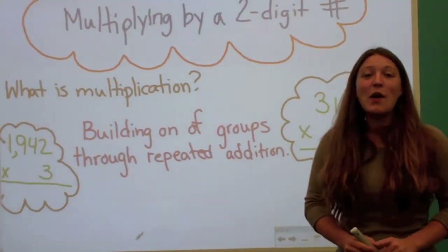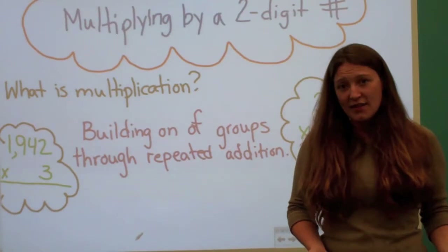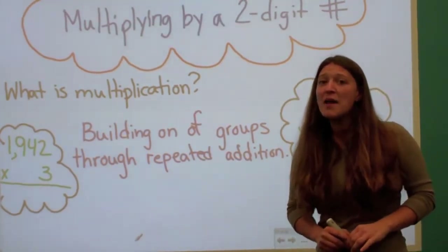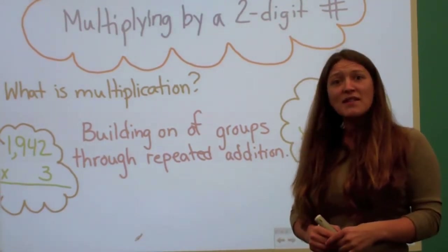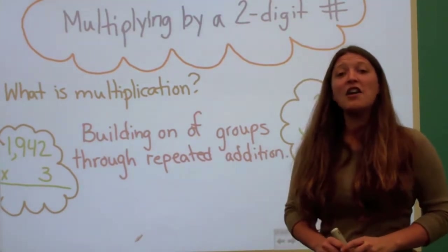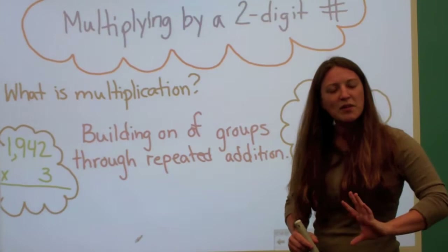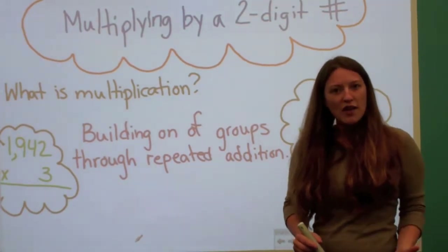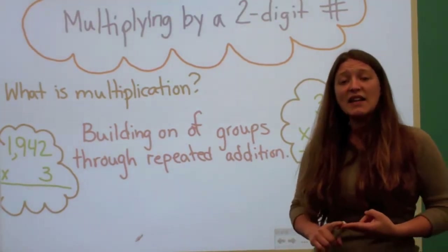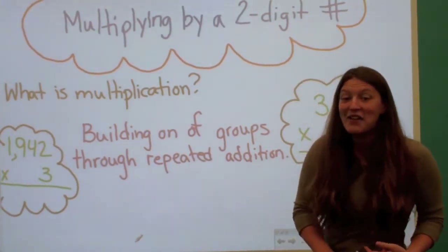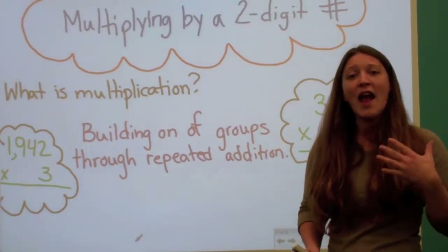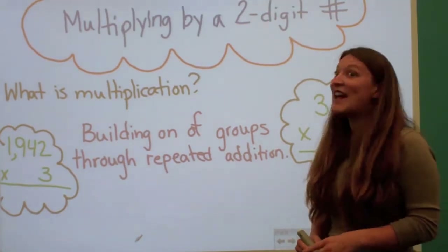Good evening fourth graders and welcome to another flipped lesson. I'm Miss Kessler and today we are going to be learning how to multiply by a two-digit number, meaning there is a number in the tens place and in the ones place in our multiplier. Remember: I'll let you know where to take your notes, you should be taking notes, and you can pause, rewind, and replay this video as many times as you'd like. Let's get started.